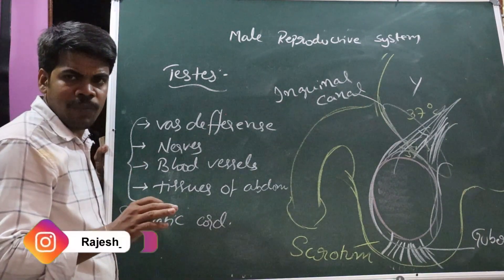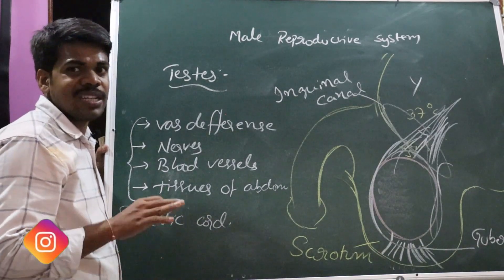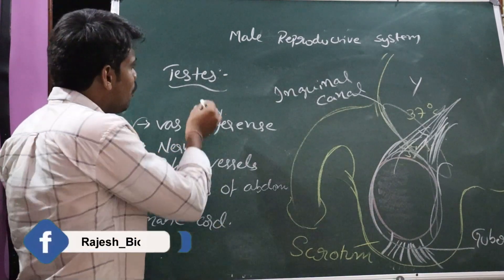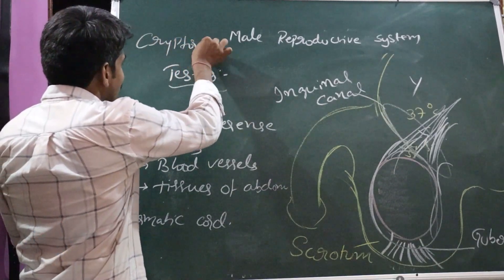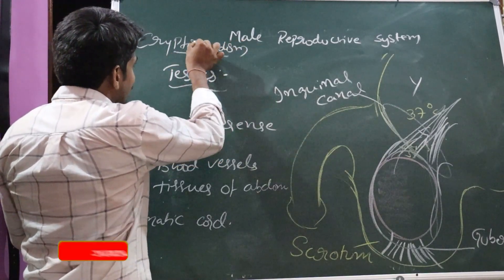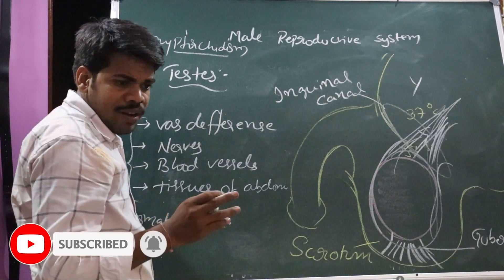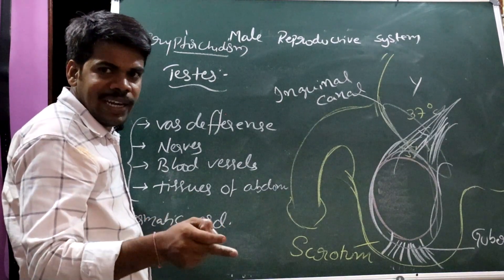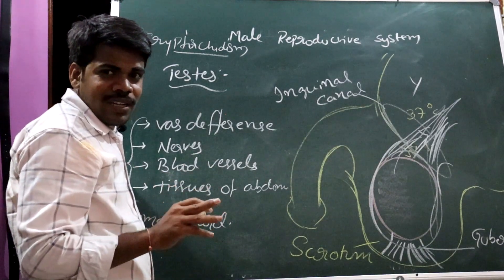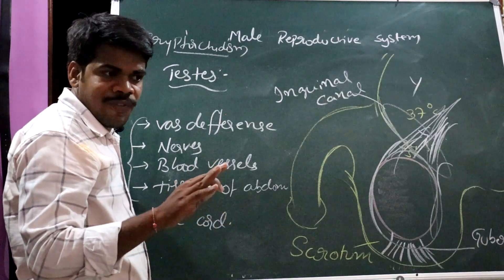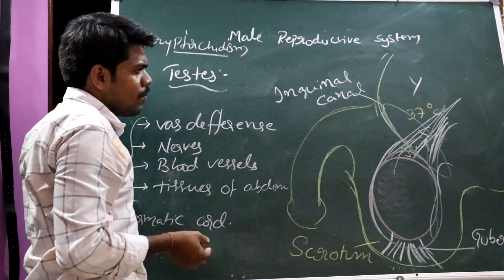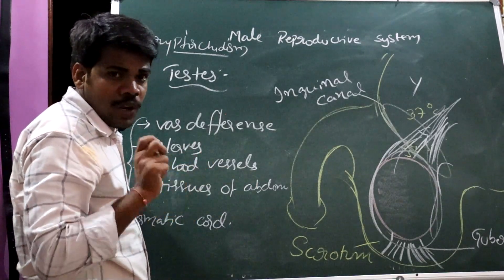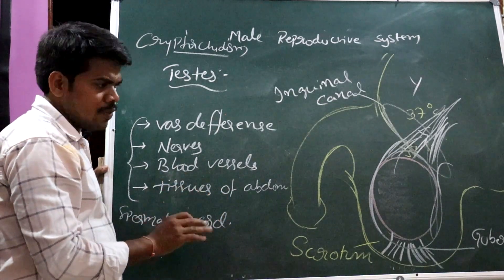Sometimes, because of certain conditions, the testes do not descend into the scrotum. That condition is called cryptorchidism — a very important term. 'Orchid' relates to the testes, and 'crypto' means hidden. So cryptorchidism is the condition where the testes fail to descend into the scrotum.